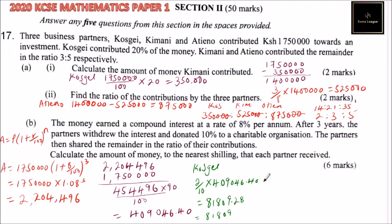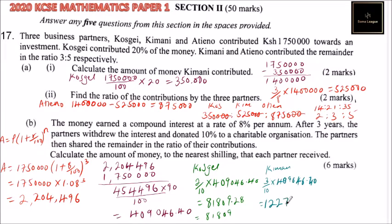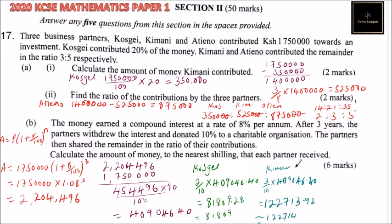We come to Kemani. Kemani contributed 3 out of 10, so we multiply 3 out of 10 by 409,046.40. Using your calculator, you find Kemani got 122,713.92, which we round off to 122,714.